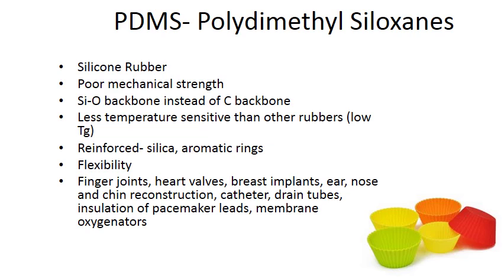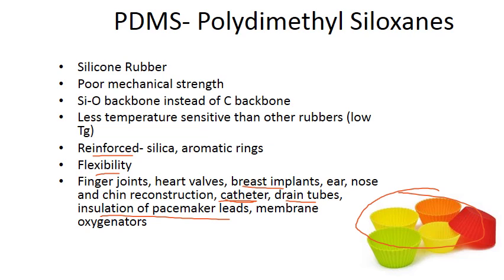PDMS, or poly dimethylsiloxanes — silicone rubber — is illustrated here with bakeware made from silicone. PDMS has poor mechanical strength but great flexibility and moldability. It is less temperature sensitive than other rubbers. Reinforced silicone uses silica for added strength. Applications include finger joints, heart valves, breast implants, reconstructive surgery, catheters, draining tubes, insulation of pacemaker leads, and membrane oxygenators.